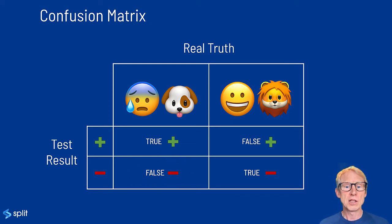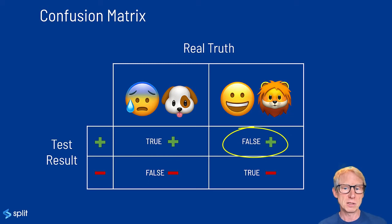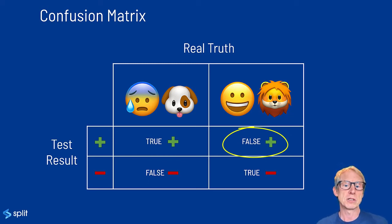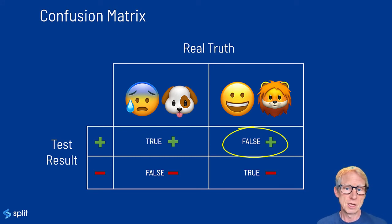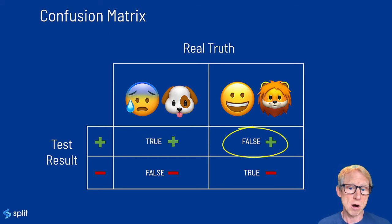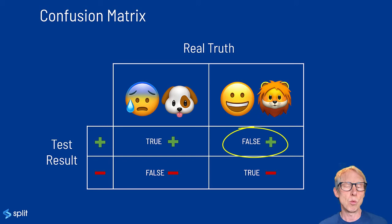And finally, the fourth possibility is a false positive: the truth is negative but the test predicts a positive. In other words, the person is not sick, but the test inaccurately says that they are. This is called a type one error in statistics.